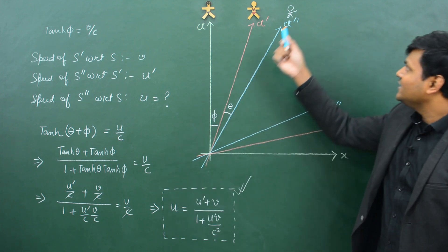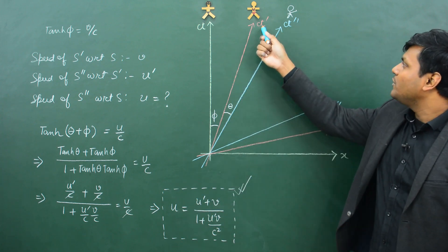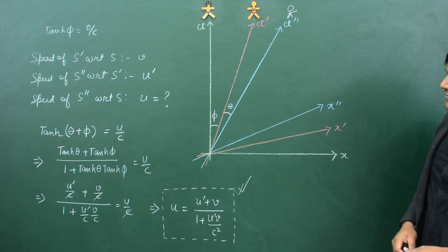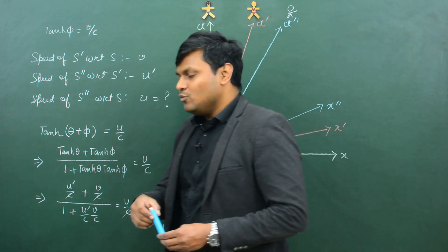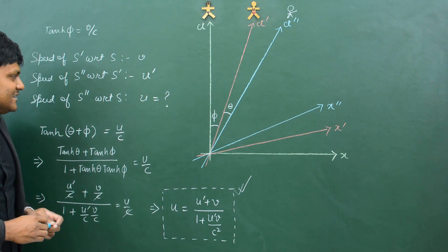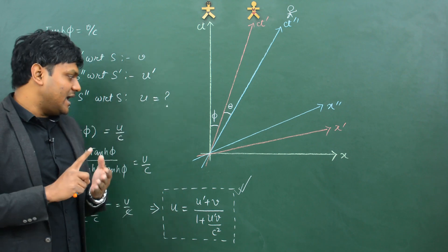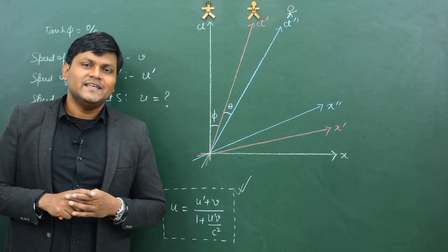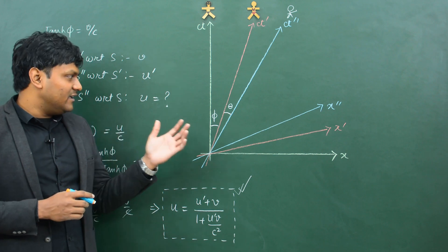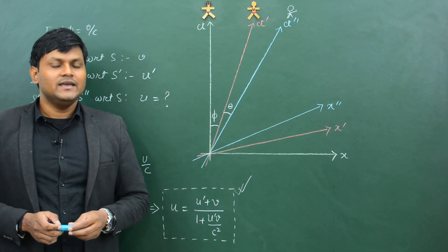So U is the velocity of Goku with respect to Batman, U dash is the velocity of Goku with respect to Superman, and V is the velocity of Superman with respect to Batman. These are the relativistic velocity transformations in special relativity. As I have demonstrated in today's lecture, we can use simple Minkowski space-time diagrams to demonstrate elegant conclusions of relativity: namely the relativity of simultaneous events, time dilation, length contraction, and relativistic addition of velocities. I hope you enjoyed this lecture. Thank you very much, I will see you in the next video.